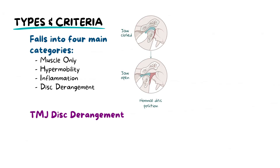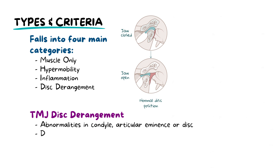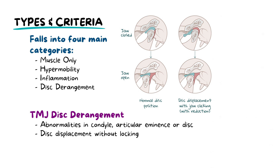TMJ disc derangement has four subtypes. First is a deviation in anatomy, where there are anatomical abnormalities in the condyle, articular eminence, or the disc itself. The second is disc displacement without locking, where the disc is out of place, causing a clicking sound during jaw movement. This happens due to a loose collateral ligament and hypermobility.